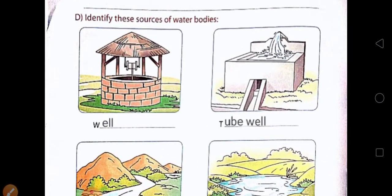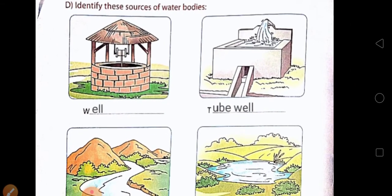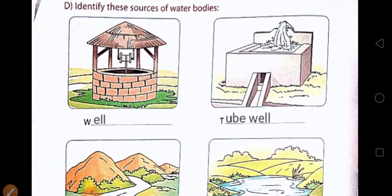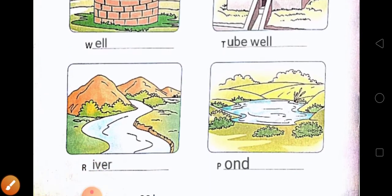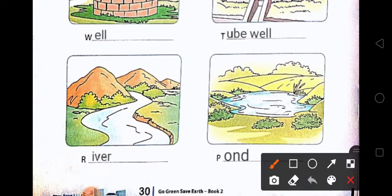Exercise D. Identify these water bodies. Number one: you can see clearly that it is a well. Next is tube well, next is river and then pond.